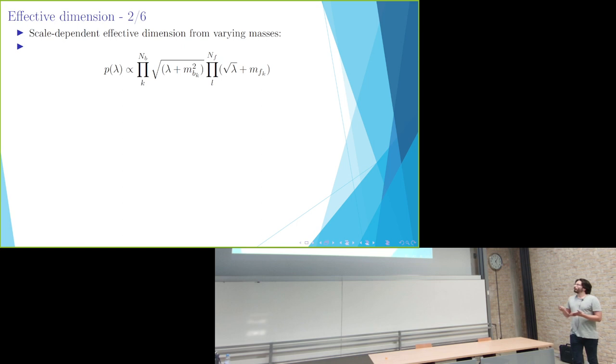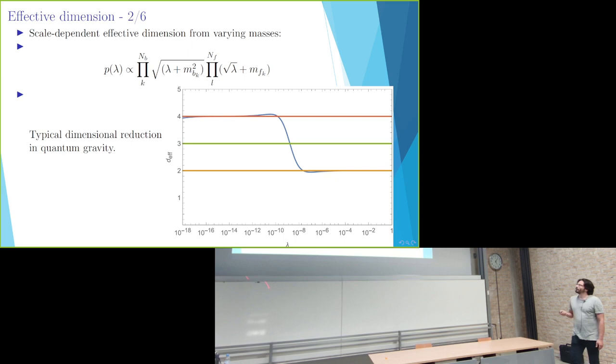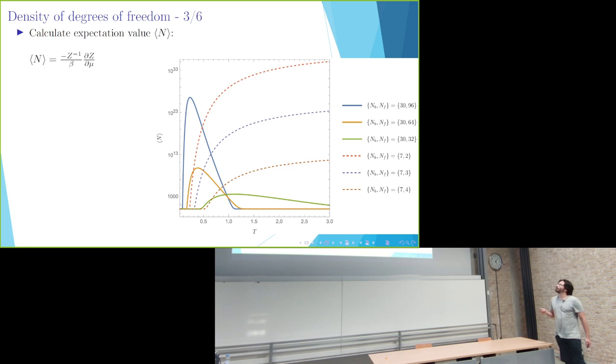What I showed you until now was for constant mass, but just to have a quick side step: if we would look at varying masses, we can also have a scale-dependent effective dimension, which is typical in many approaches to quantum gravity. Here we chose parameters such that we have a typical dimensional reduction from a four-dimensional phase with some transitional regime to a two-dimensional high-energy regime. This was just a side step with what could be done if you have different masses for your degrees of freedom.